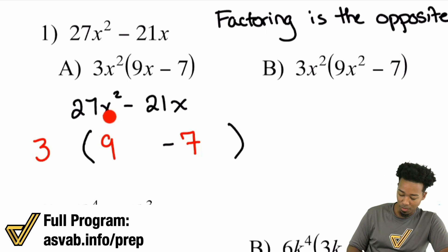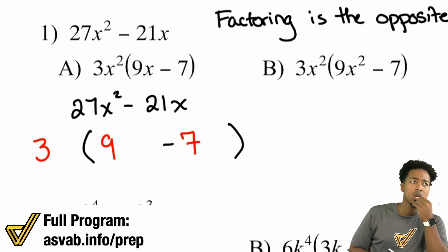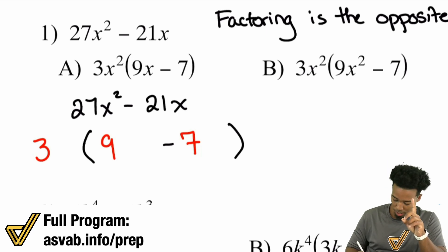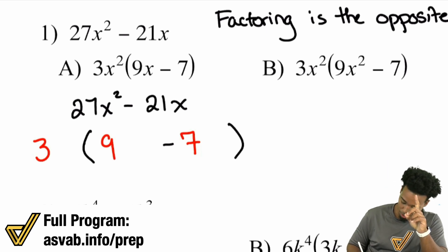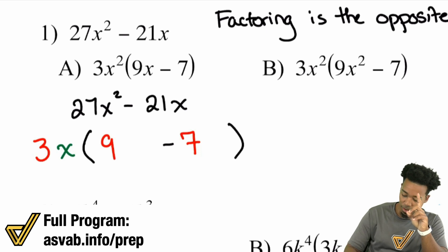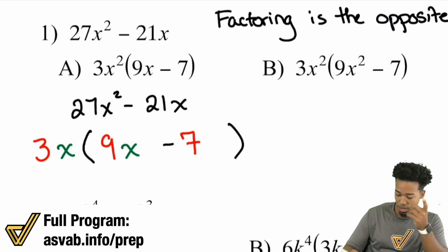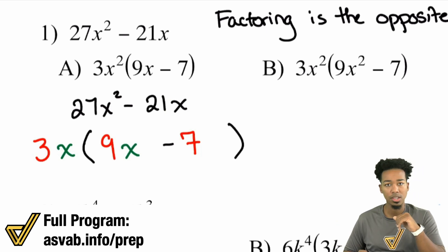And now take a look at the variables. We have x squared and x. Well, how many x's do they share? How many x's do they have in common? Just one. Because if I divide one of the x's out of x squared, I'm left with x. If I divide the x out of that x, well, that's just nothing — that's just going to be 7. Stays the same.